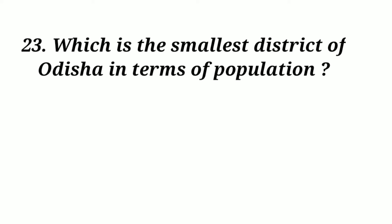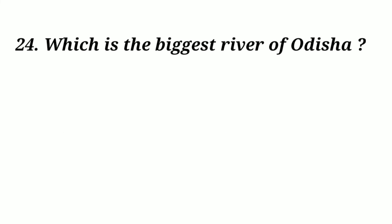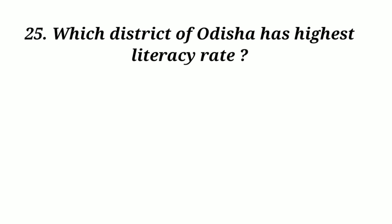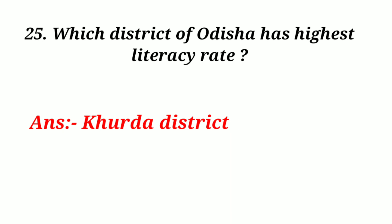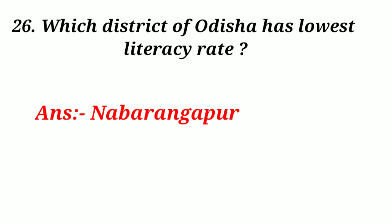Which is the smallest district of Odisha in terms of population? Answer: Jagatsinghpur. Which is the biggest river of Odisha? Answer: Mahanadi. Which district of Odisha has the highest literacy rate? Answer: Khordha district. Which district of Odisha has the lowest literacy rate? Answer: Nabarangpur.